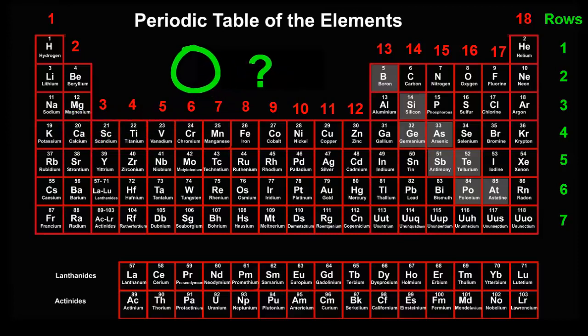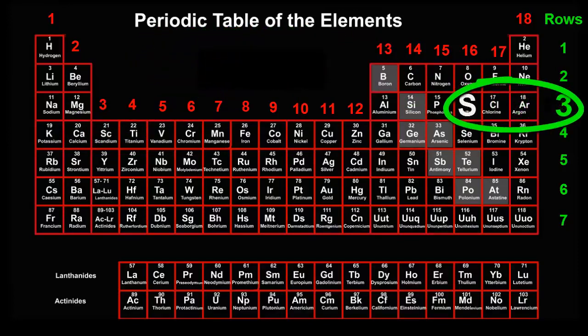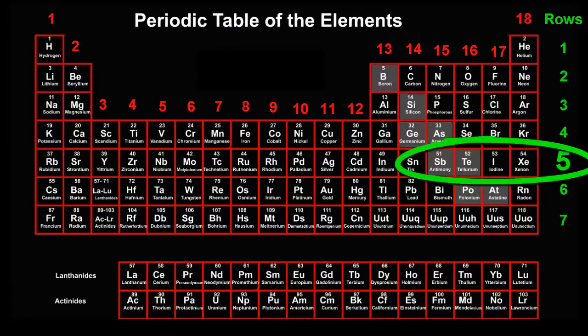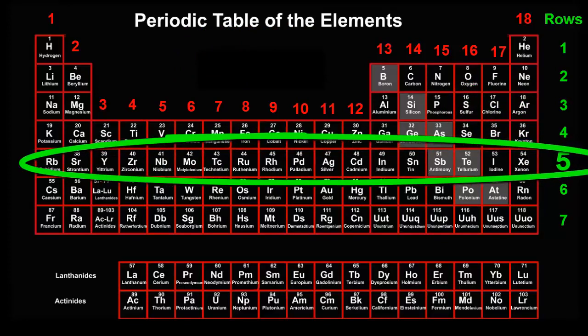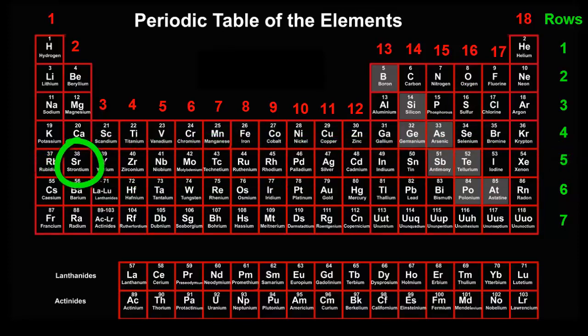Which row is sulfur in? The third row. Choose any element in the fifth row. There are a lot of possible answers for this. Could be strontium, tin, iodine. You choose.